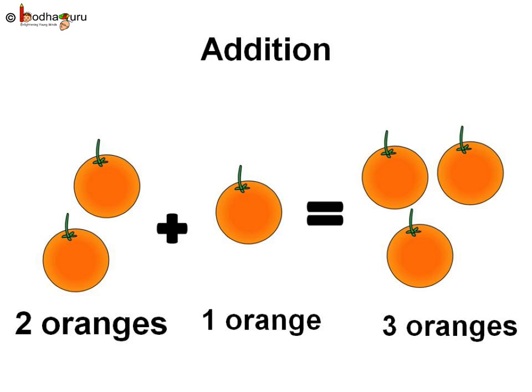Two oranges plus one orange is equal to one, two, three — three oranges.